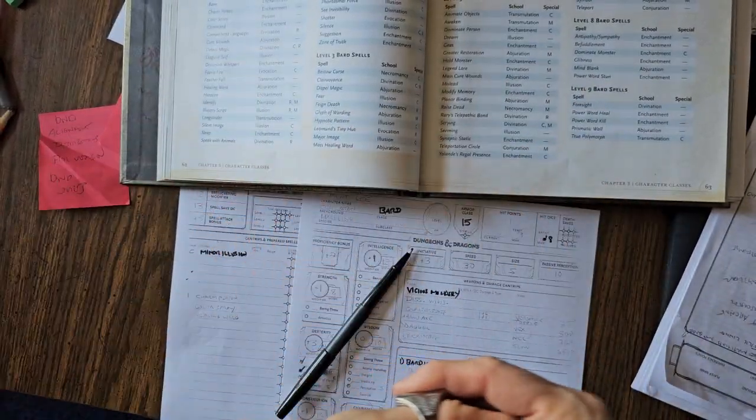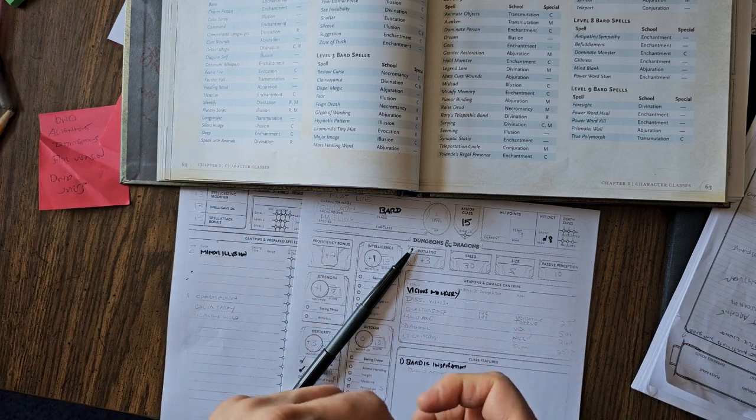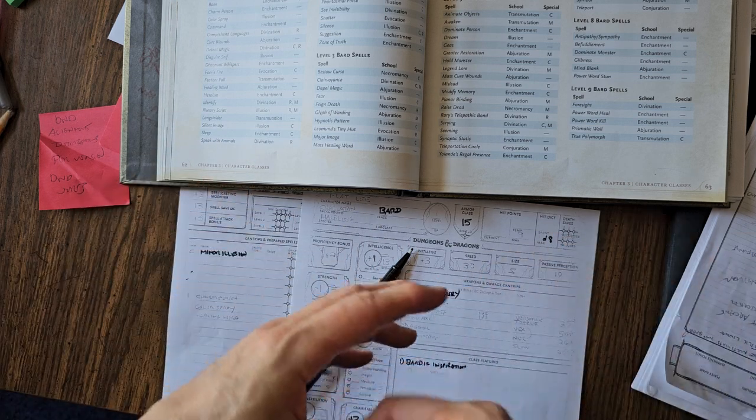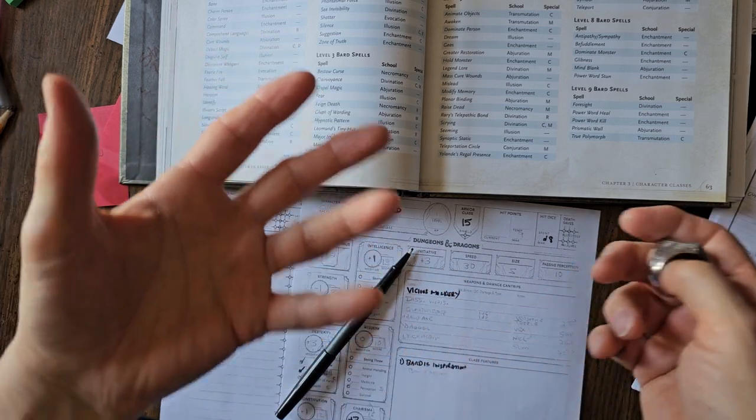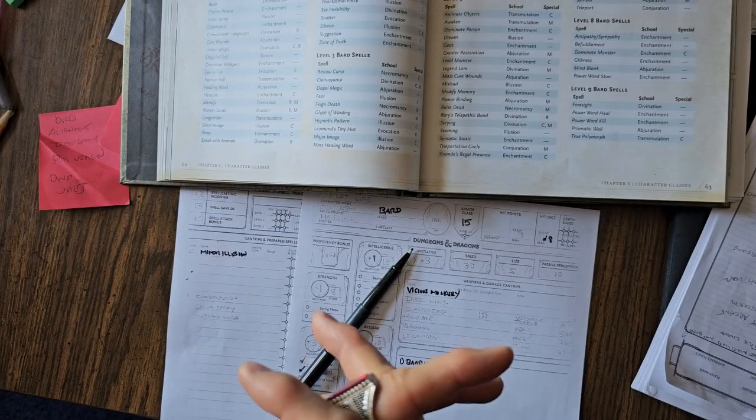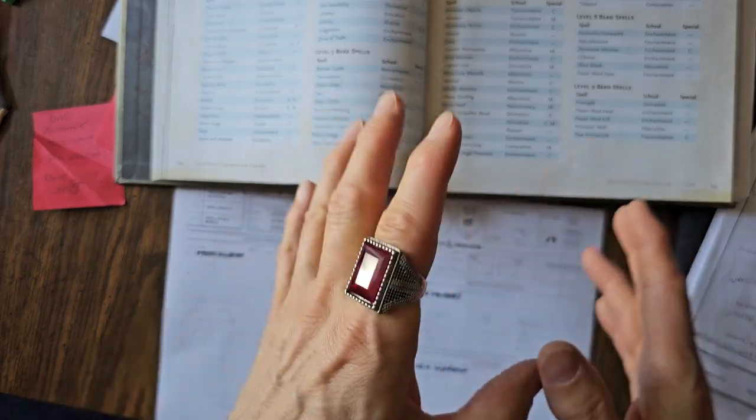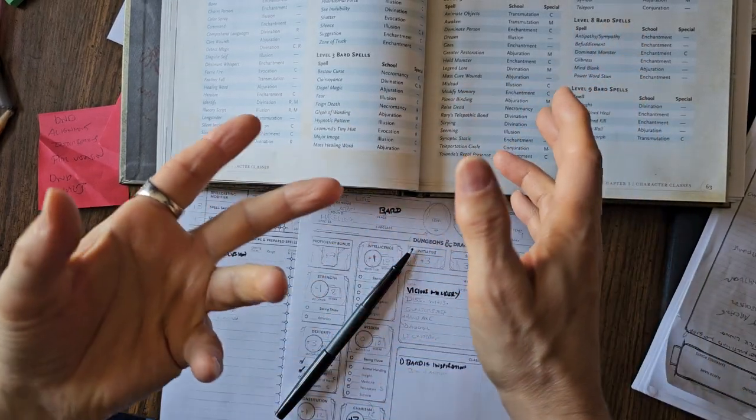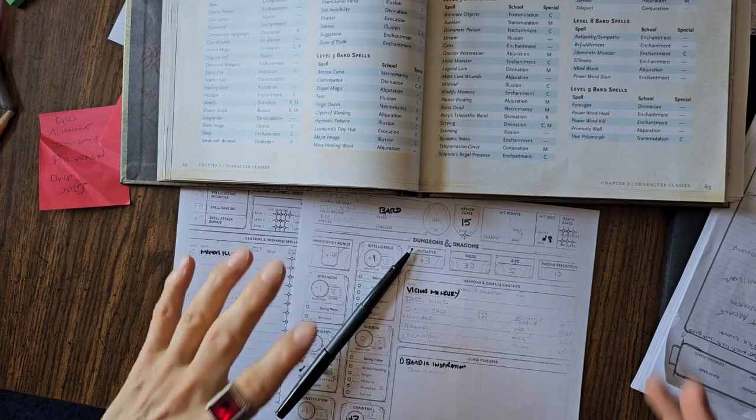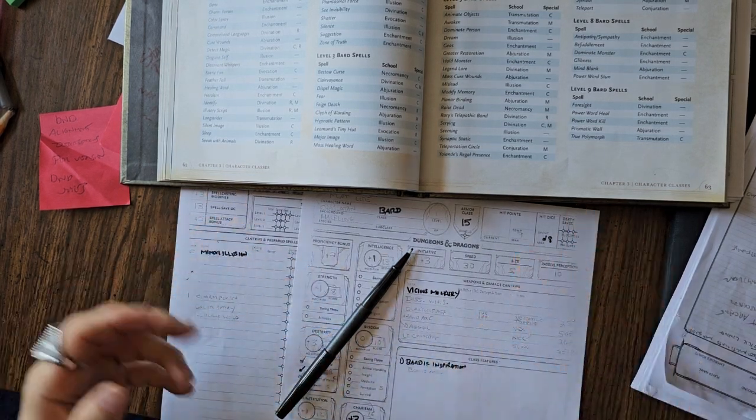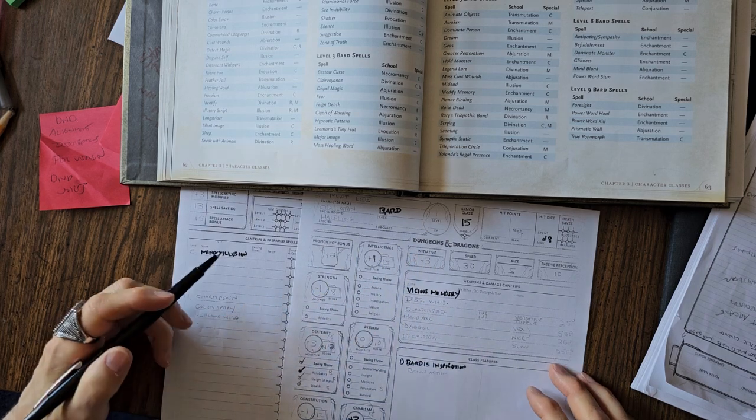I also picked Vicious Mockery because Vicious Mockery allows for so much hilarity at the table. Basically, you're using insults in order to cause psychic damage to your opponents. That can be a lot of fun. I'm going to make a bunch of videos - I have a whole bunch on this channel that are just insults that you can use for D&D that are clean. Things like Yo Mama jokes or jokes that make fun of a character's intelligence level or the way they smell. It's a lot of fun. I really like that.